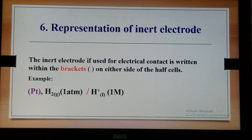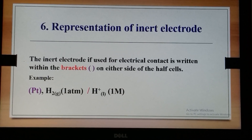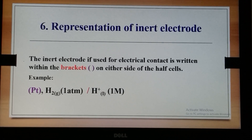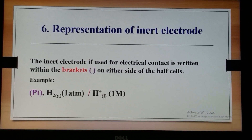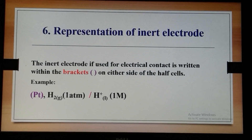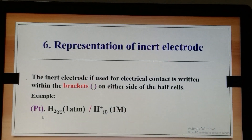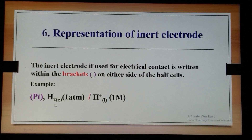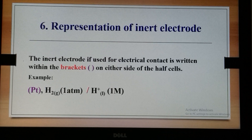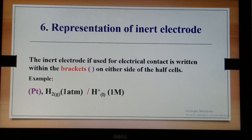If in a galvanic cell an inert electrode like platinum is used, the inert electrode is written within brackets on either side of the half cells. In the case of a gas electrode such as the hydrogen electrode, the platinum used for electrical contact is written within brackets. If the hydrogen electrode is acting as anode it is written on the left-hand side; if acting as cathode, the platinum electrode is written on the right-hand side.